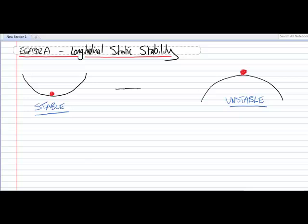In the neutrally stable case, it's equivalent to having our ball sat on flat ground. We would describe this as neutrally stable. If that ball is perturbed, there is no restoring force — nothing that's going to try and get it back to its original position. But it's not going to run away either; it's not going to exponentially deviate from this position. There's nothing forcing it away from its original state and nothing restoring it back to its original equilibrium state.